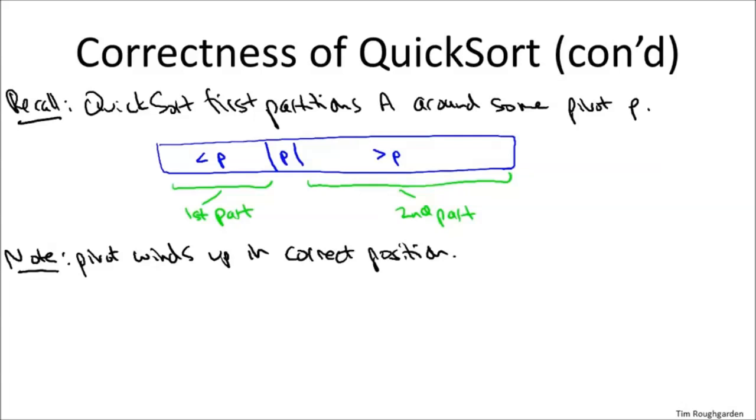And recall our observation from the overview video that the pivot winds up in its correct position. Where would the pivot be, where is any element supposed to be in the final sorted array? Well, it's supposed to be to the right of everything less than it, and to the left of everything bigger than it.